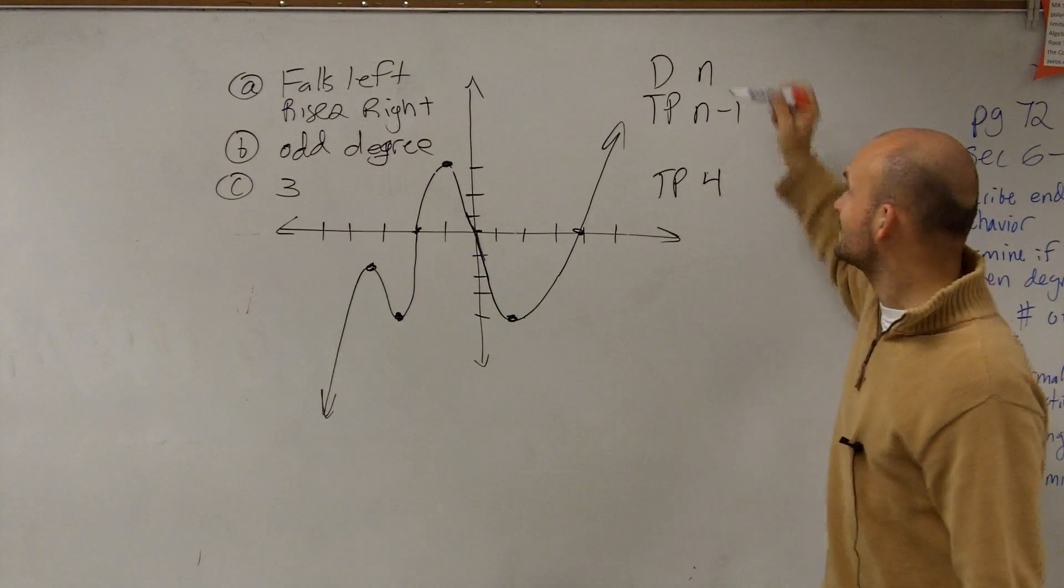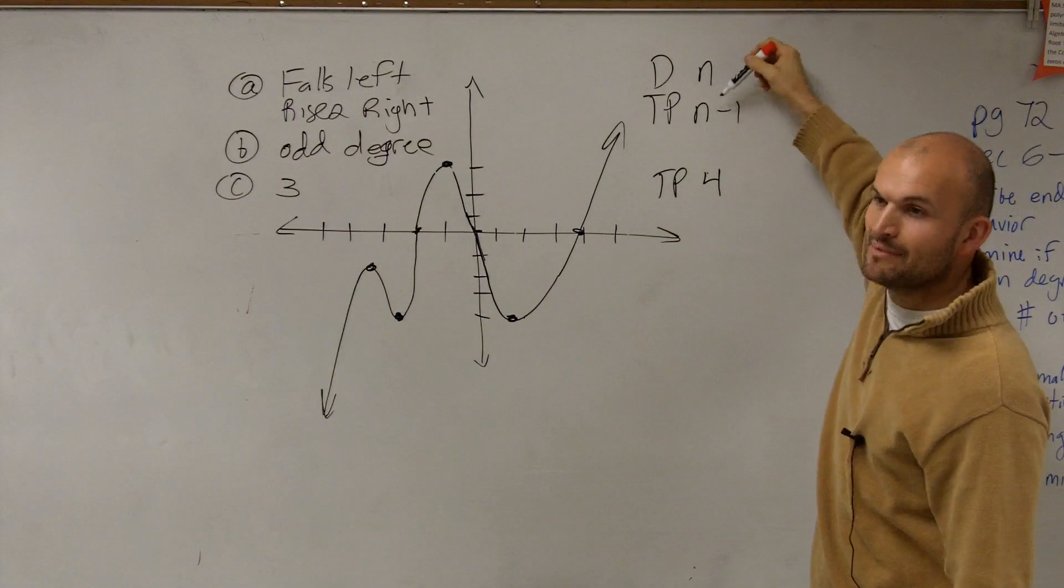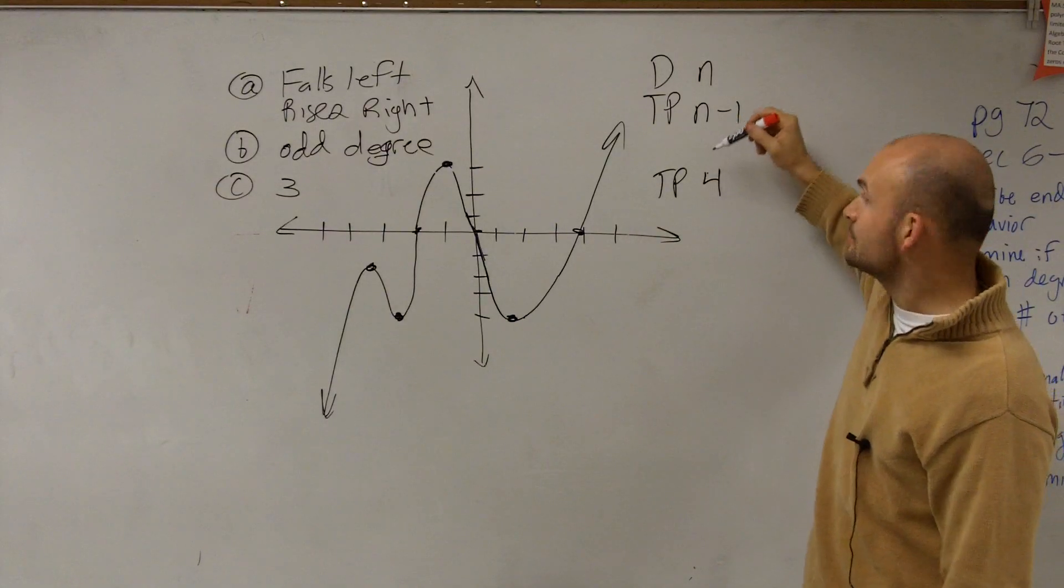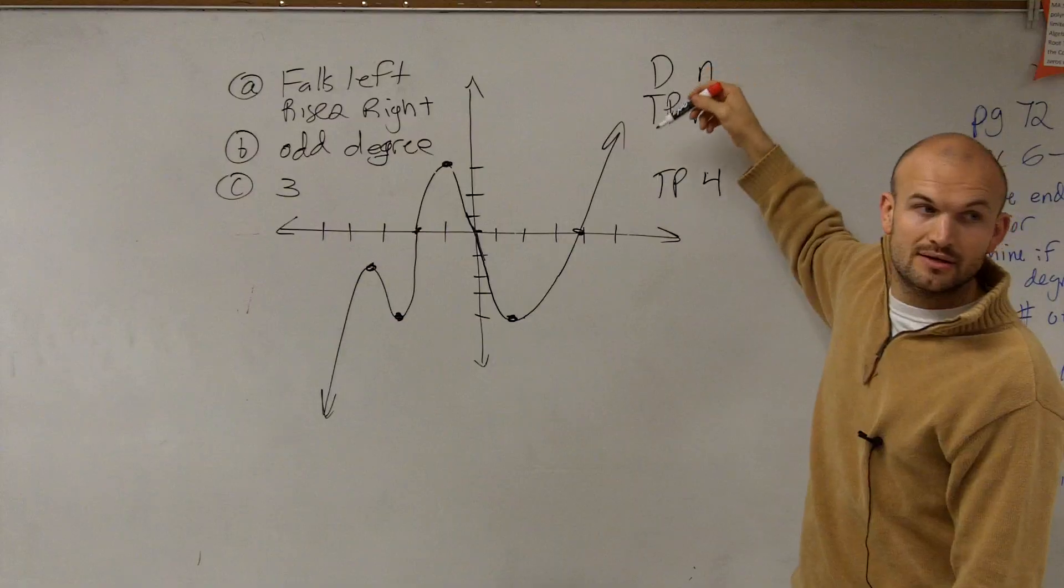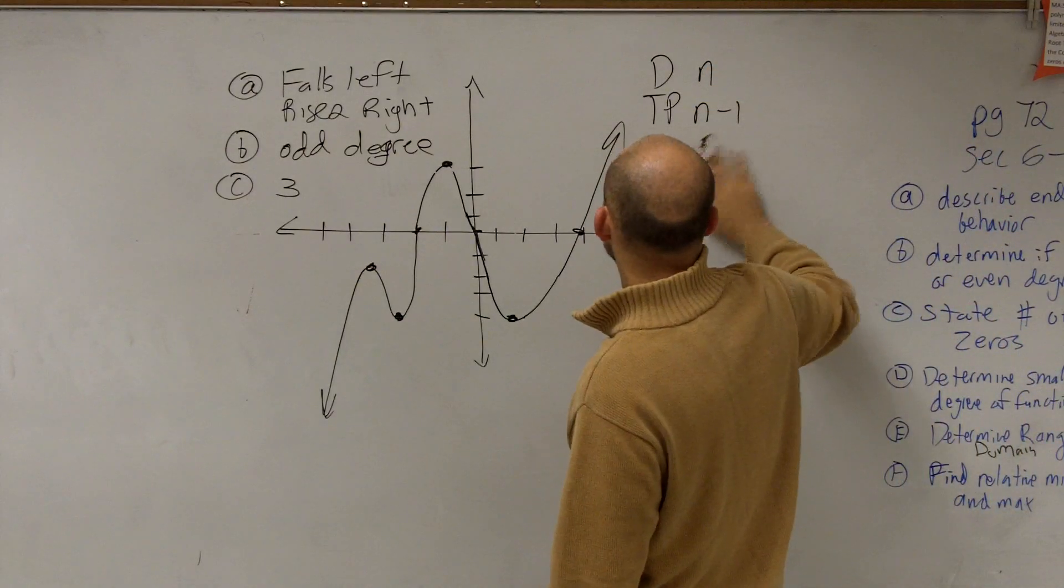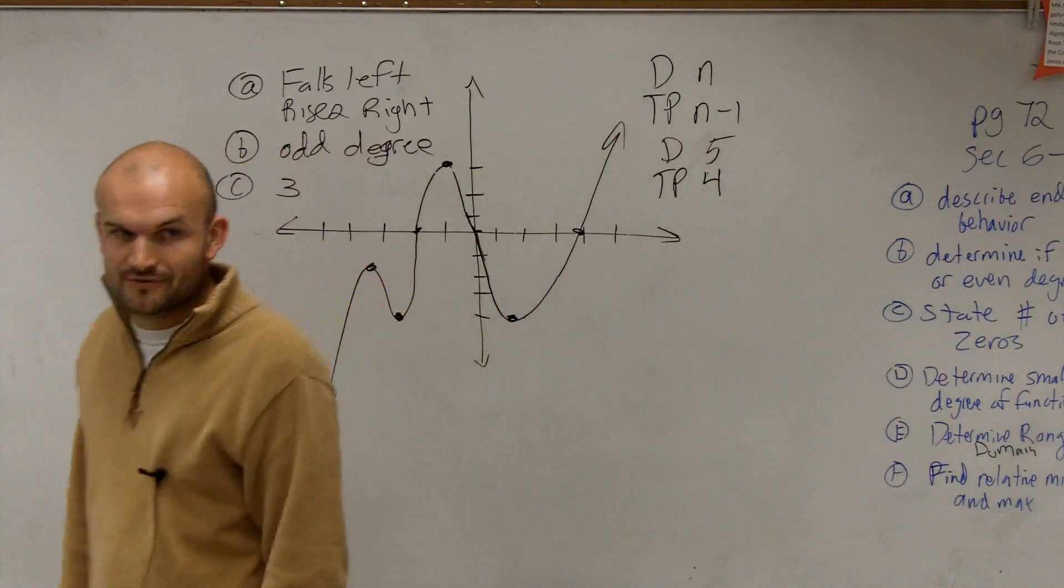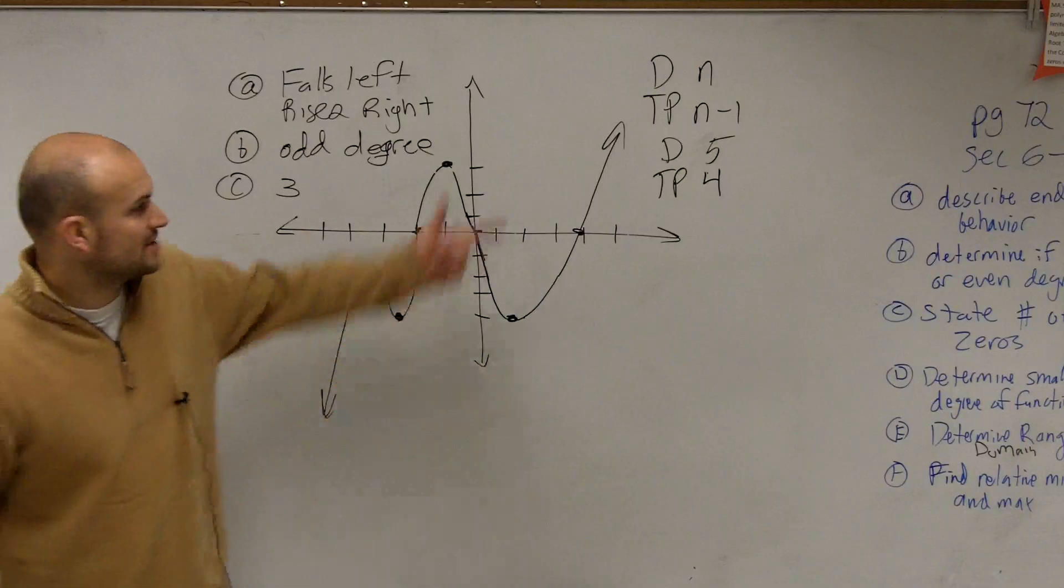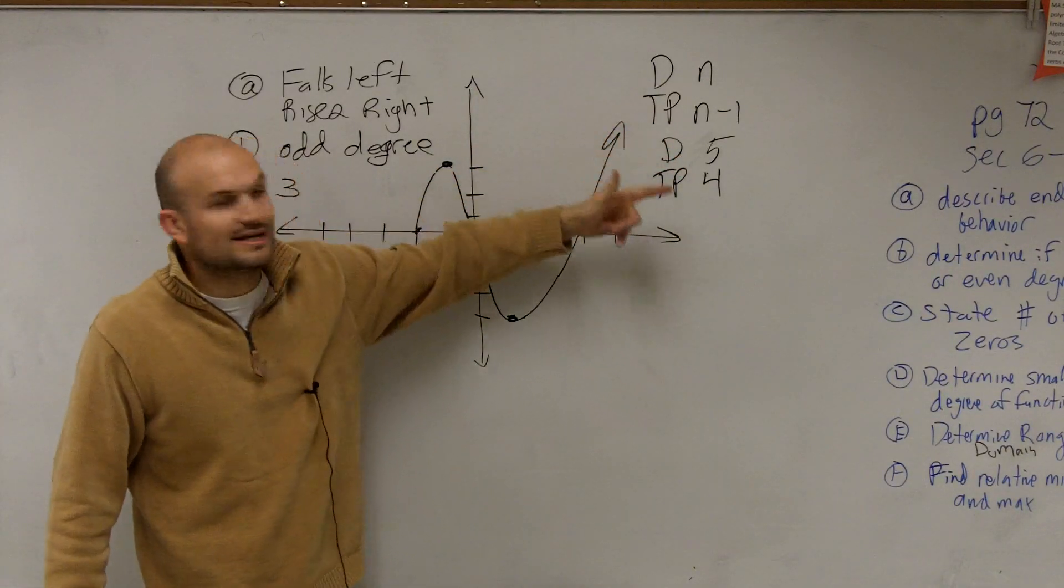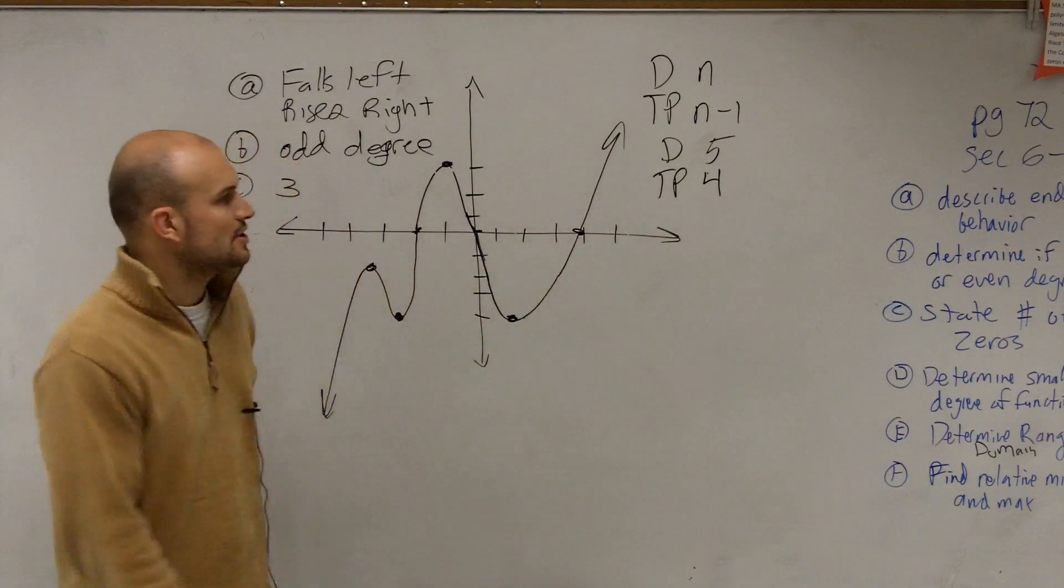Well, hold on. If the degree is n, and your number of turning points is n minus 1, I now give you the number of turning points, which is n minus 1. So the degree is going to be 5. So for this example, your minimum degree has to be 5. It's going to be at least 5. Does that make sense? Because if your degree is 5, 5 minus 1 is 4, which is your turning points. So that was d.